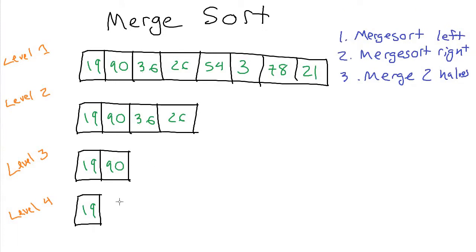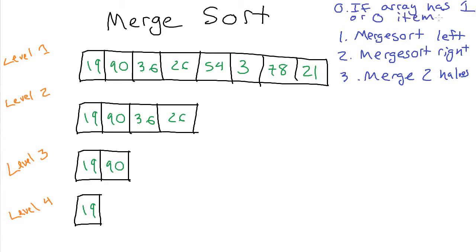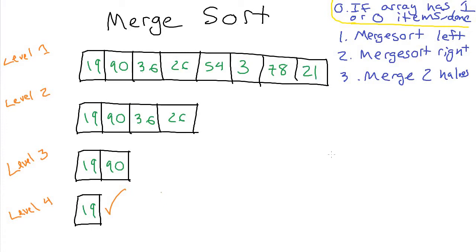We need a base case here, which we haven't defined yet. What should it be? If we have an array that only has one item, it's got to be sorted — you can't sort something with only one element. If there's only one, it's in order with itself. So the base case is: if the array has one item or zero items, there's nothing to do and we return right away. Level four hits the base case and we go back up to level three. Then we merge sort the right half, which also drops to level four and hits the base case again — just one item, done.